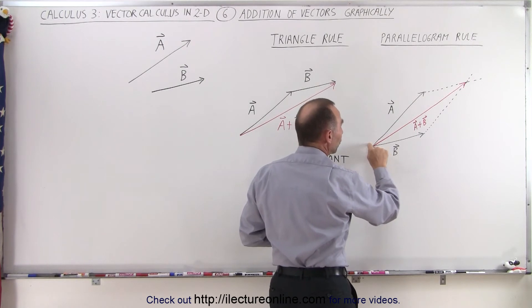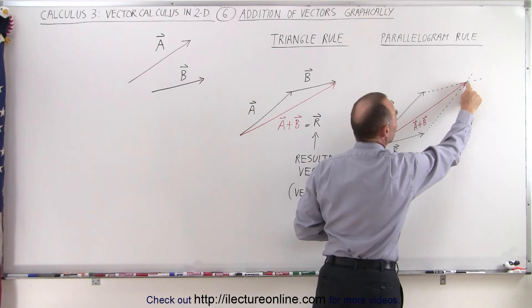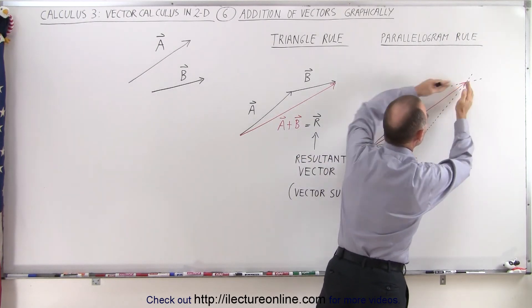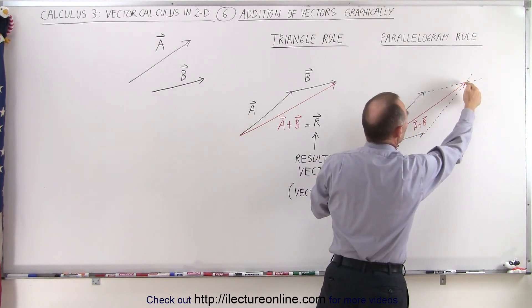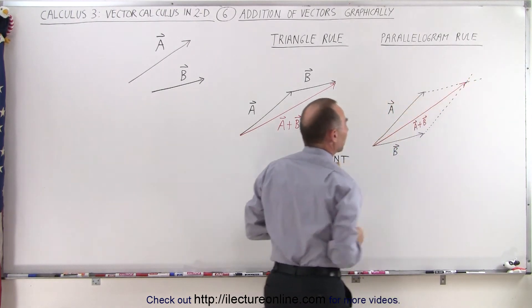From the tail where the two meet here to the point right here where the two parallel lines meet. That will be also the vector sum or the resultant of adding the two vectors together.